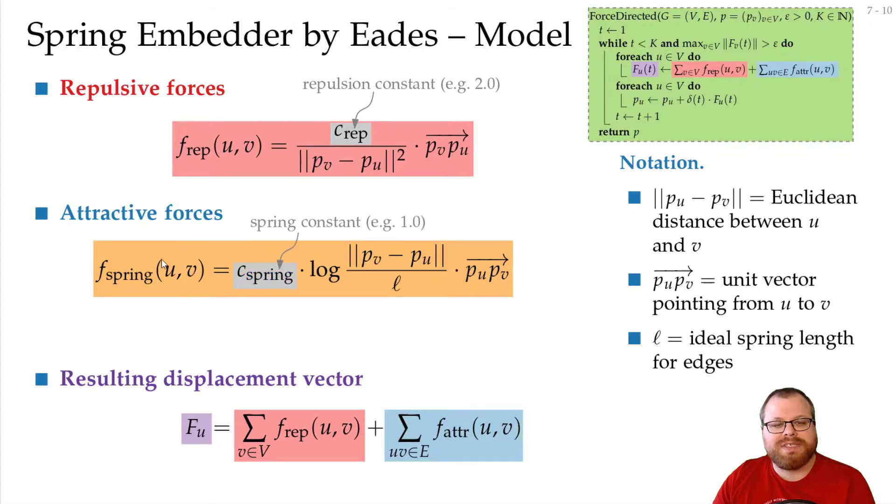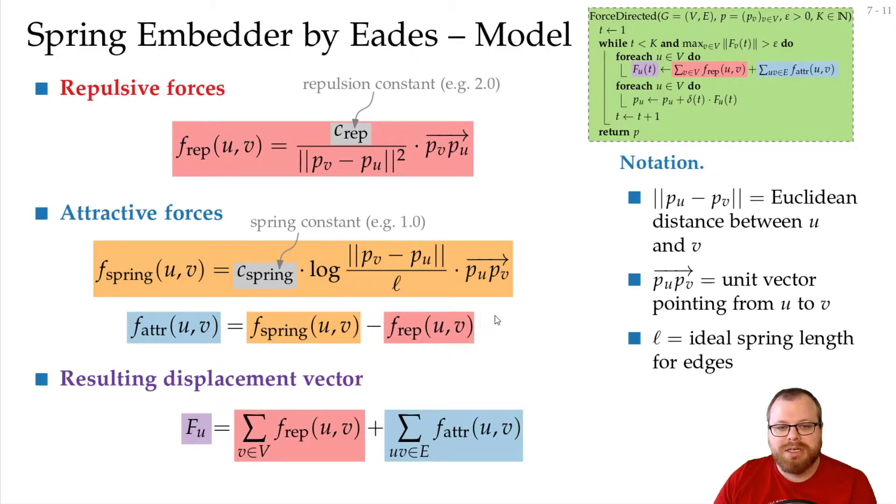And then again we have some constant, the so-called spring constant, and Eades says that this constant you can choose as 1, that's usually a good choice. However, there's one additional thing. We have these attractive forces, but we don't want vertices that lie on the same spring to also push away from each other. We've already modeled this here. So for our attractive forces, we remove the repulsive forces again if they are adjacent. We have already modeled this in this logarithm here.